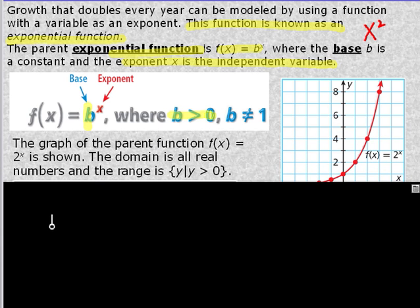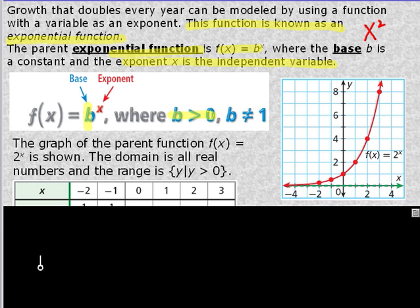The graph of the parent function f(x) = 2^x is shown. So 2, in this case, our base is 2. And what this means is that whatever you're modeling is doubling. So the 2 tells you how things are, at what rate things are changing. This is what an exponential graph looks like. It's kind of a half parabola.